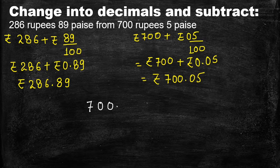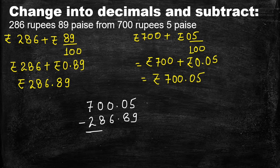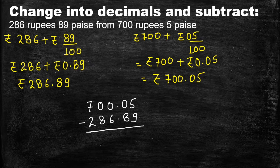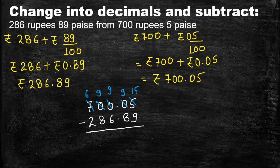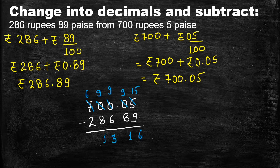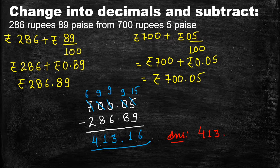Write them in columns and start subtracting. We cannot subtract 9 from 5, so we borrow from previous places — but all the places are 0, so we borrow from 7, leaving 6 there, and the zeros become 9, 9, 9, and the 5 becomes 15. Now: 15 minus 9 is 6; 9 minus 8 is 1; decimal point; 9 minus 6 is 3; 9 minus 8 is 1; and 6 minus 2 is 4. So the answer is Rs. 413.16.